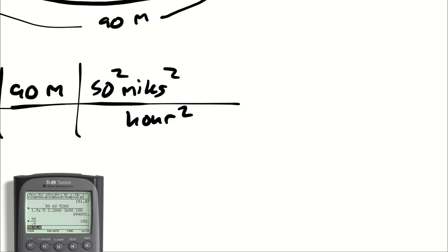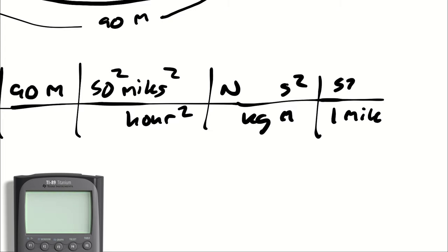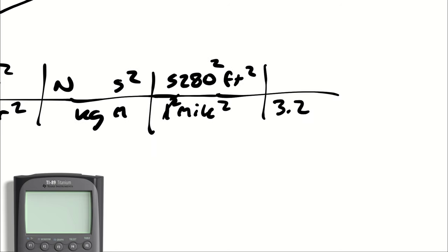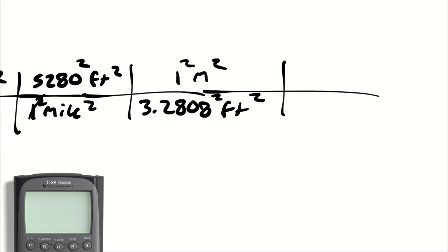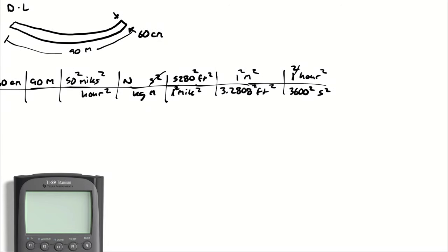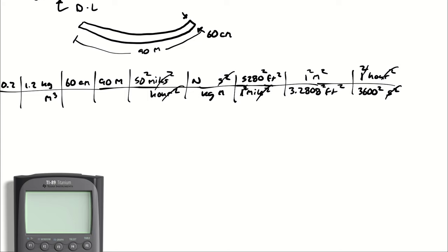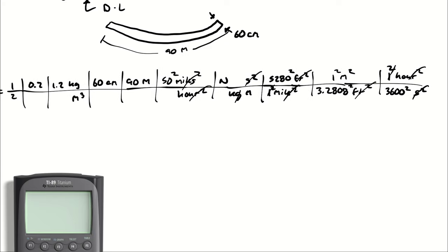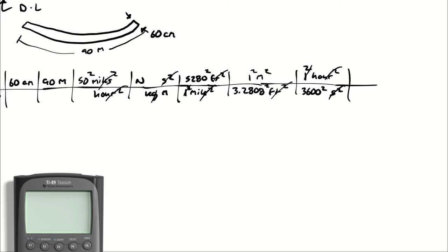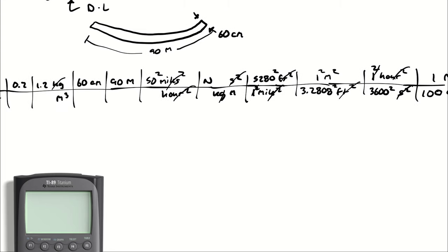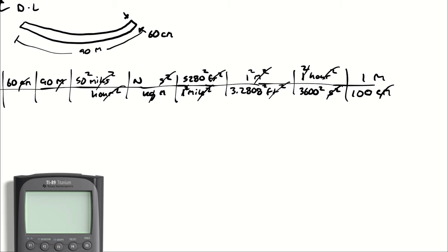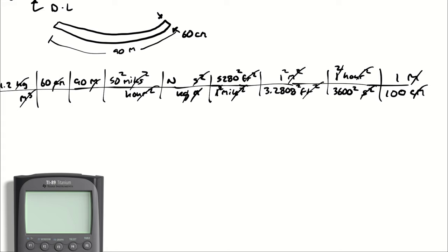So we're looking for units of newtons. A newton is a kilogram meter per second squared. One mile is 5,280 feet, square everything. There are 3.2808 feet in one meter, square everything. And then 1 hour squared is 3,600 squared, second squared. And then at this point, second squared cancels second squared, hour squared cancels hour squared, mile squared cancels mile squared, feet squared cancels feet squared, kilograms cancels kilograms. 100 centimeters is 1 meter, centimeters cancels centimeters. And then I have meters, meters squared, and meters cancels cubic meters and meters. And that leaves me with newtons.